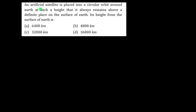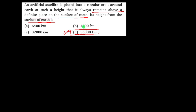An artificial satellite is placed into a circular orbit around earth such that it always remains above a definite place on the surface — that means it is a geostationary satellite. Its height from the surface of earth is 36,000 kilometers. This is the correct option, as we have already studied in the previous video.